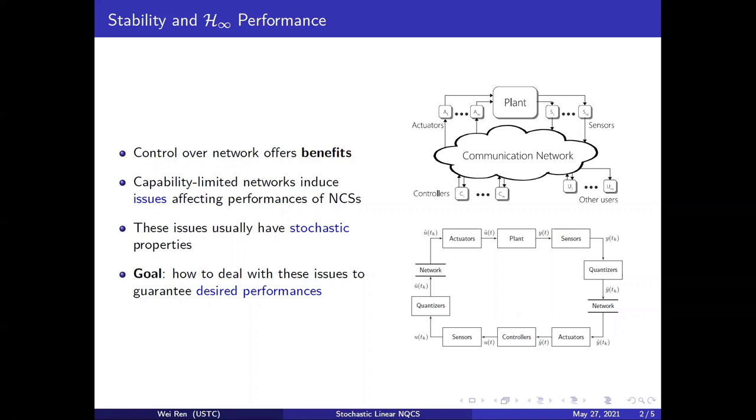Meanwhile, the communication channel induces undesirable issues, like time varying, sampling, time delays, time scheduling, quantization, and packet dropouts. These network-induced issues complicate analyses and design, and adversely affect the behavior of networked control systems. In particular, these issues usually possess random properties. Thus, our goal is to deal with these issues to guarantee both stability and H-infinity filtering performance. We consider linear plant and controller, and all network-induced issues are addressed. Among them, packet dropouts are random and conform to Bernoulli distribution. Both transmission interval and transmission delay are identically and independently distributed, and satisfy the distribution condition.